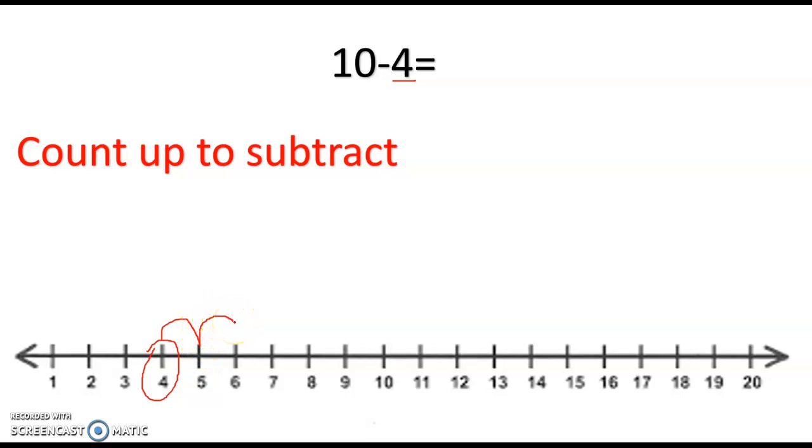So 4 to 5 is 1, 2, 3, 4, 5, 6. I made 6 jumps to get to 10. So counting up I made 6 jumps so 10 minus 4 is 6.